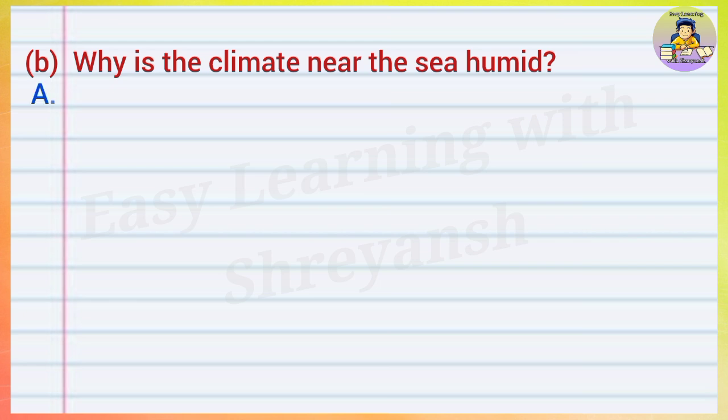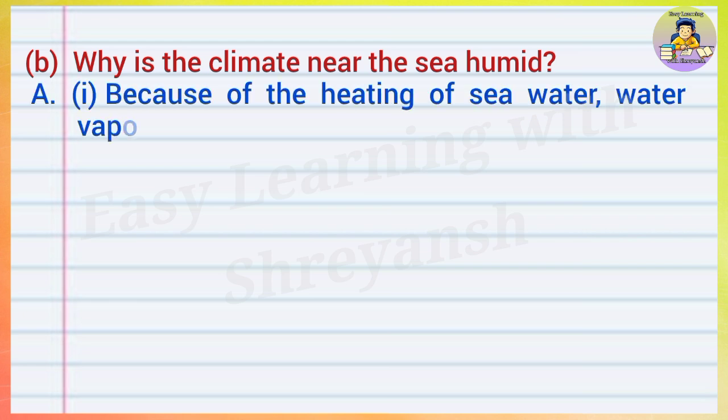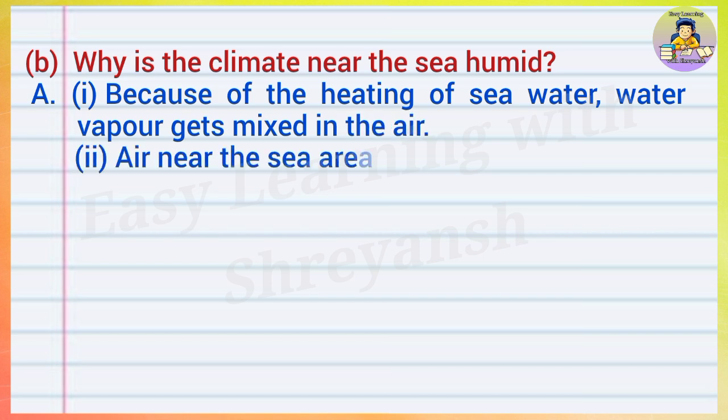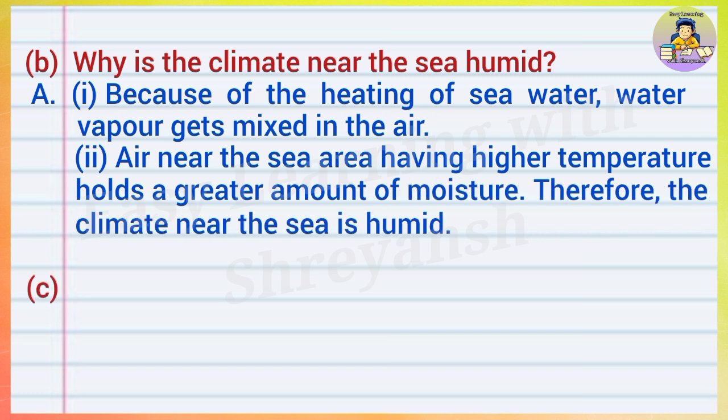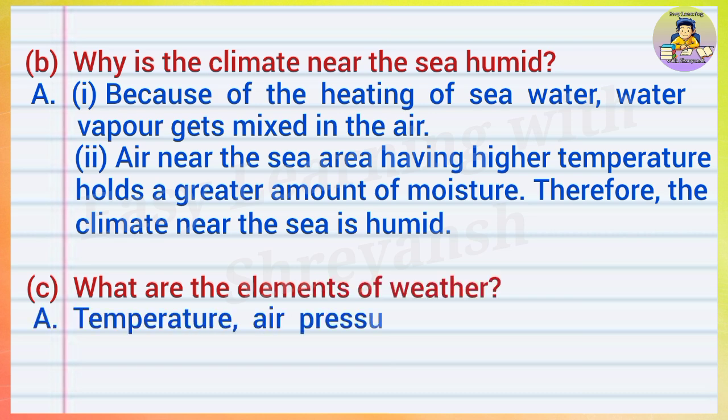(b) Why is the climate near the sea humid? Answer: Because of the heating of sea water, water vapor gets mixed in the air. Air near the sea area having higher temperature holds a greater amount of moisture. Therefore, the climate near the sea is humid.